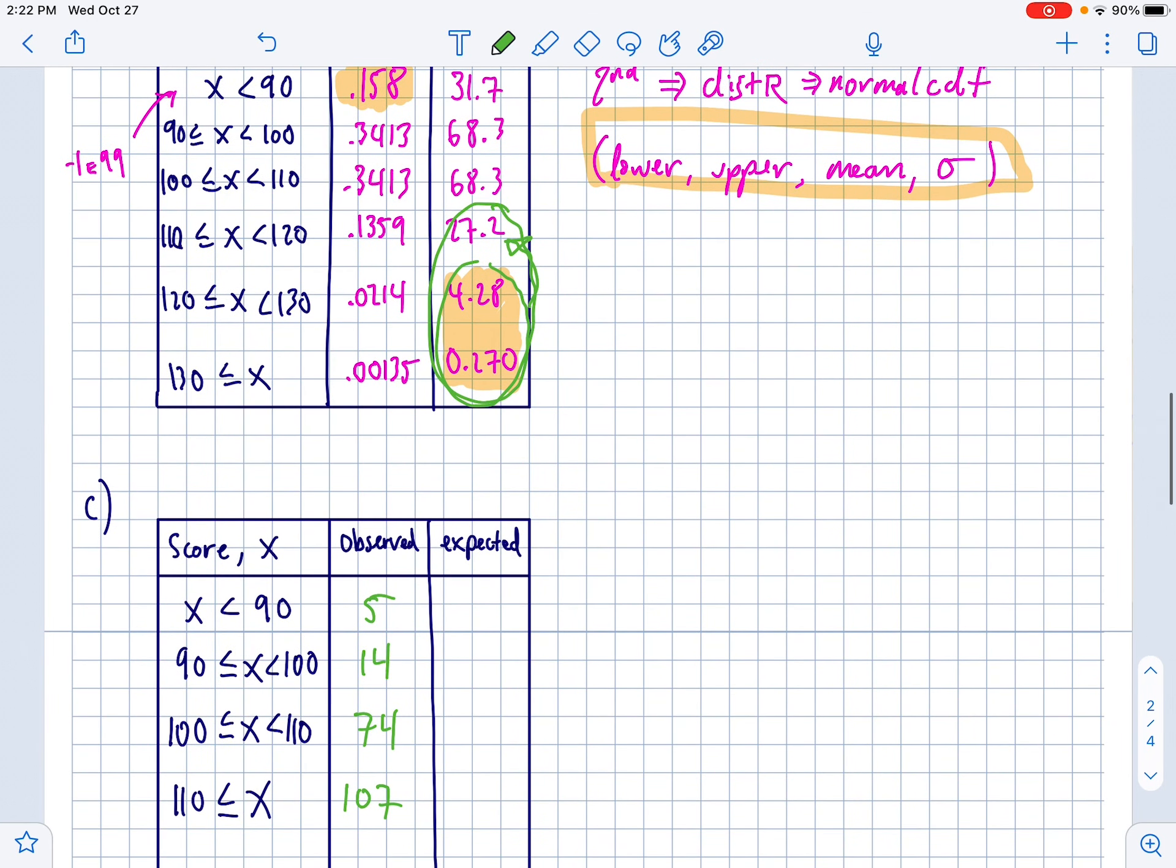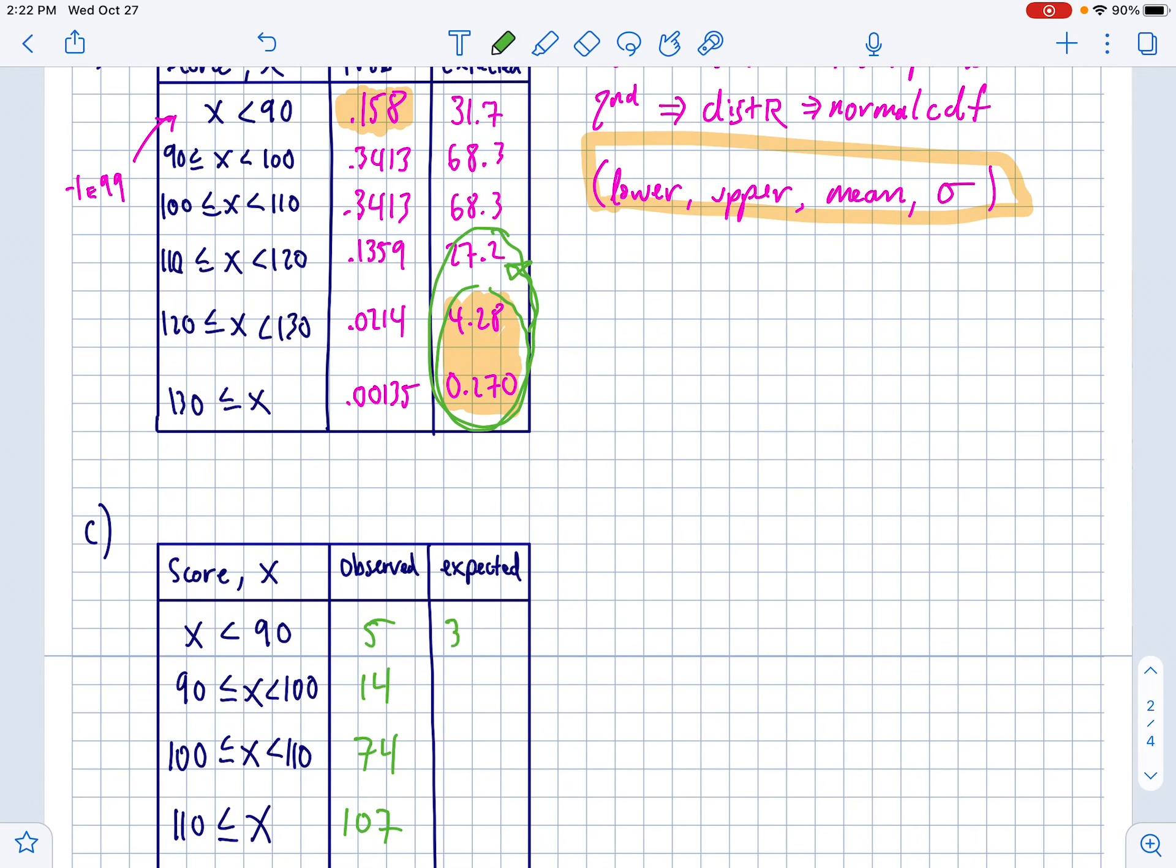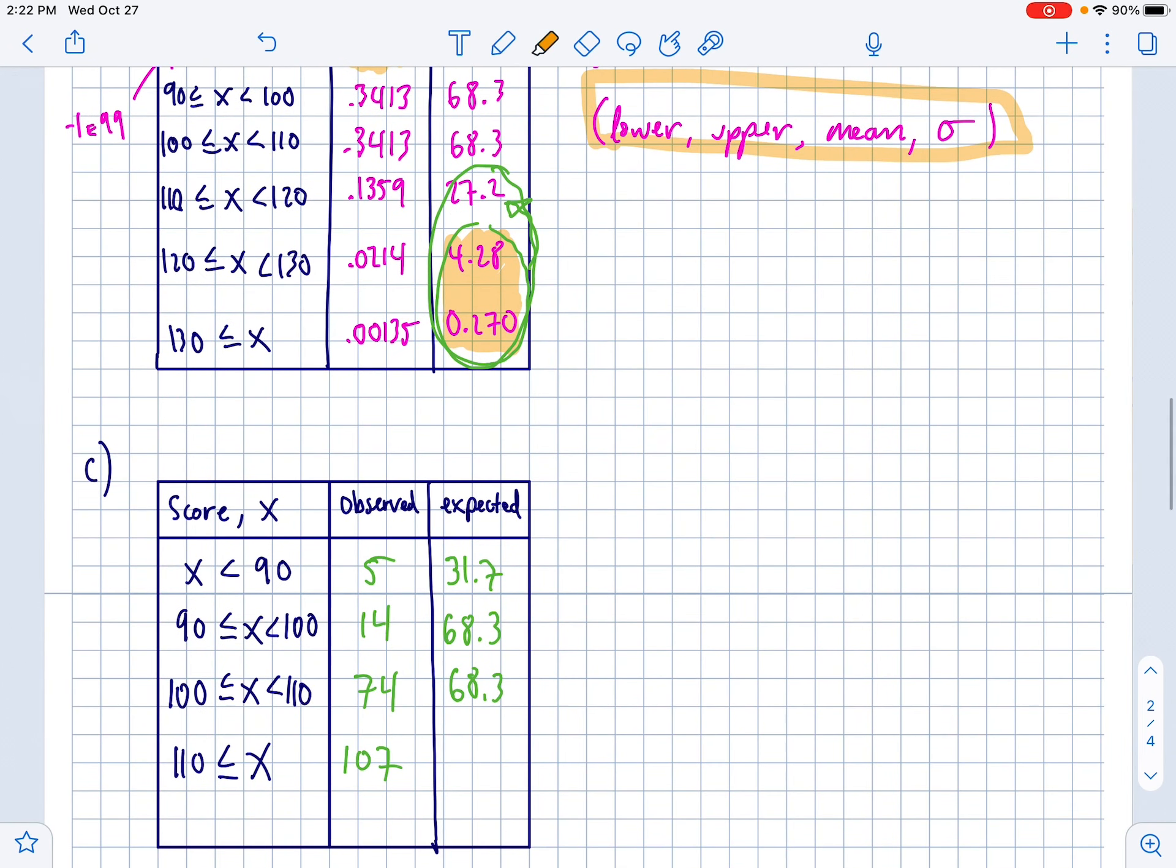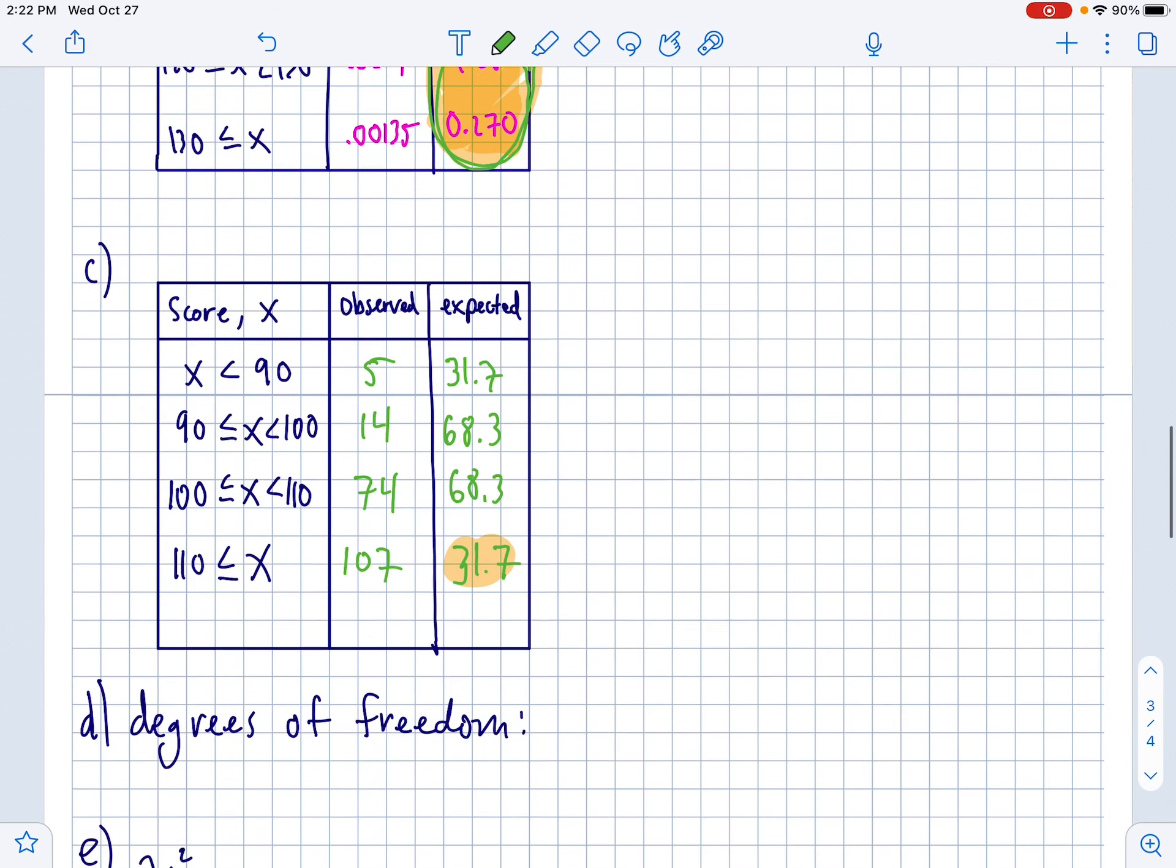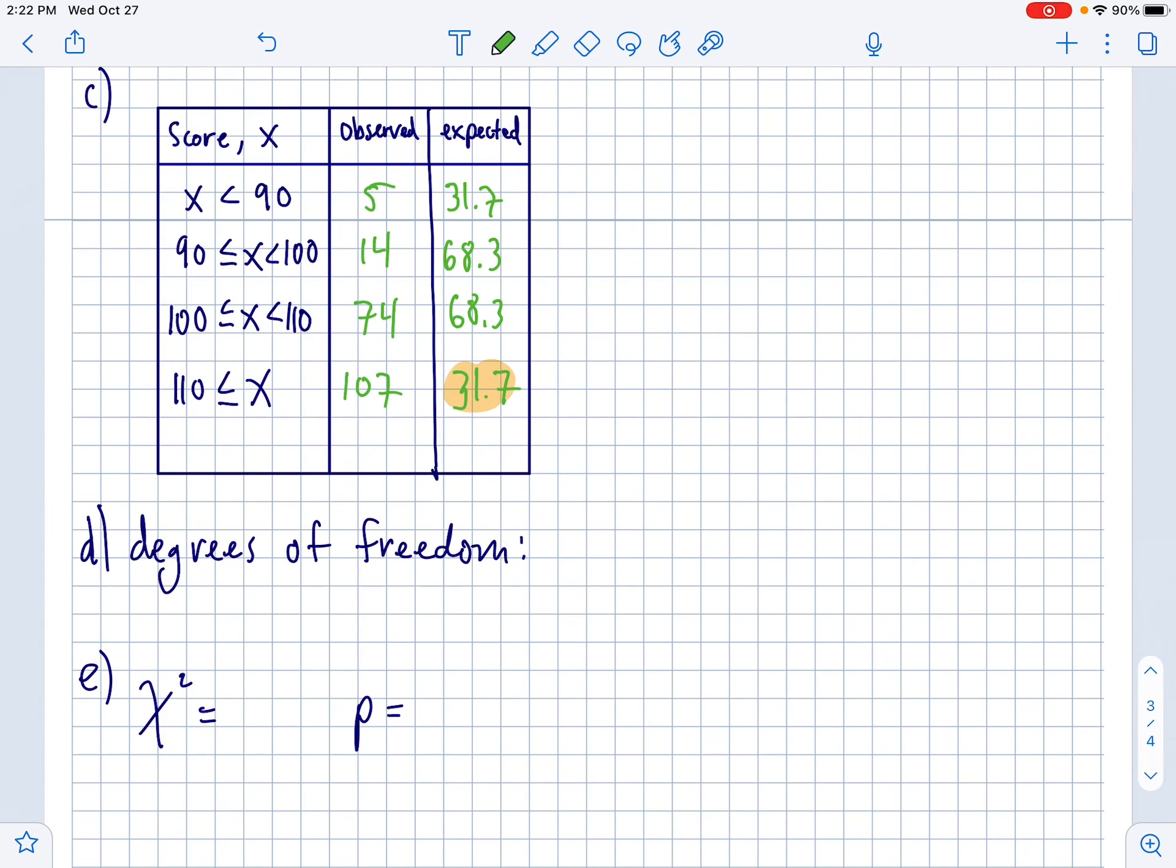So we're going to keep everything the same with the observed. The observed was just the original data, which was 5, then 14, from 0 to 90, there was 5, then there was 14. And then up here, there was 74. But then the last three categories get condensed because anything past here is going to get all lumped together. So when you lump 58, 34, and 15 together, you get 107. Now we'll do the same thing with the expected values. The first three are the same: 31.7, 68.3, 68.3 again. But then this spot right here is going to be all three of these numbers together, which if you add 27.2, 4.28, and 0.270, you get 31.7.